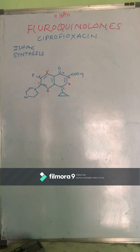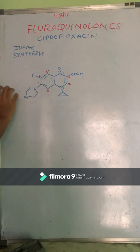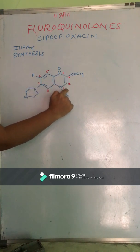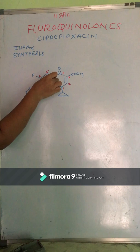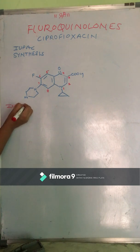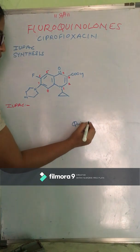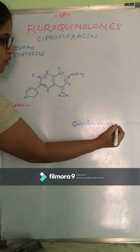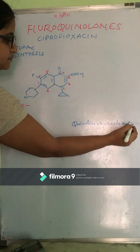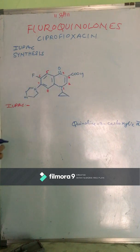Now we will write down the IUPAC name of this particular drug. This drug is of the class fluoroquinolones, and the root name is the quinoline nucleus. For the IUPAC name, we will write down the root name first, that is quinoline-3-carboxylic acid.